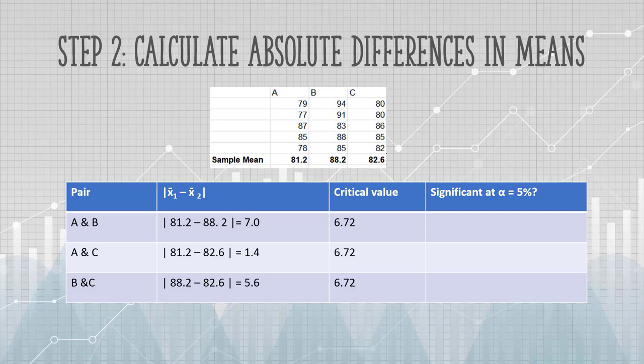The last two pairs have differences that are smaller than the critical value, so those means are not significant. The result from the Tukey test tells us that pair A and B are significantly different.